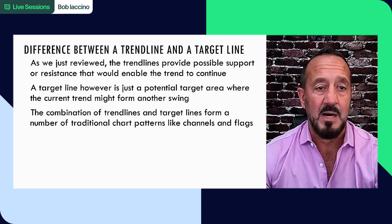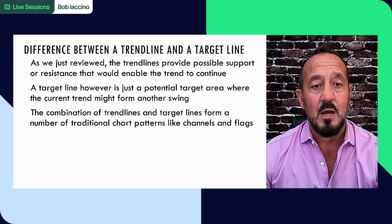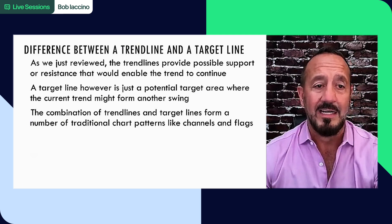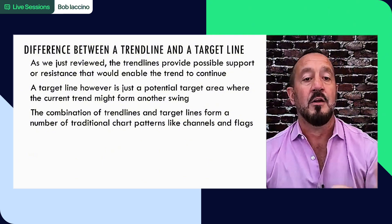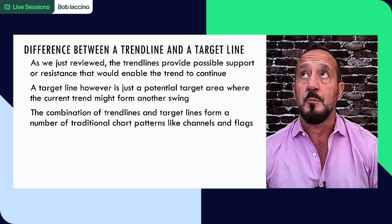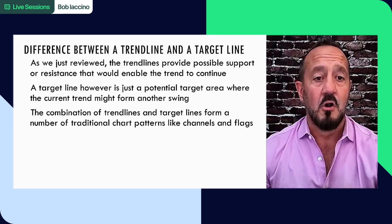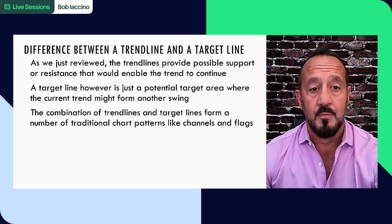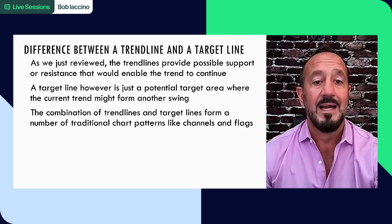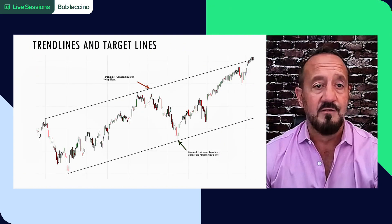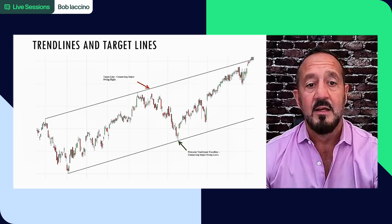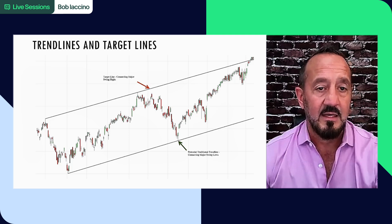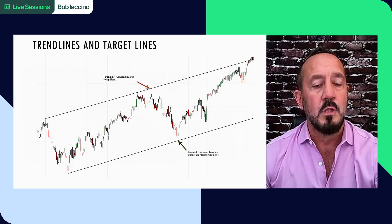Difference between a trend line and a target line: trend lines provide possible support or resistance that would enable the trend to continue. A target line, however, is just a potential target area where the current trend might be forming another swing. In the case of an upward sloping channel, a target line is a target area of that channel. A combination of trend lines and target lines form a number of traditional chart patterns like channels or flags. Below you can see an upward sloping trend line connecting swing lows, and up above you can see a target line. Within those two lines, you have a channel.